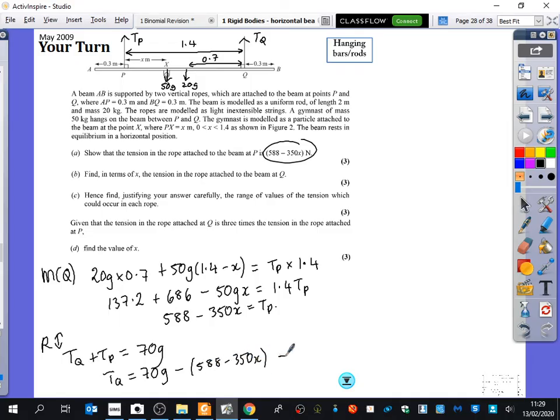So that must mean that the tension in Q is 70g minus the tension in P. Simple. So we get 70g minus 588, which is 98. And then you get the minus minus, which is the plus 350x. So it's just got unknowns in there. That's the only thing that makes this question any different at all.